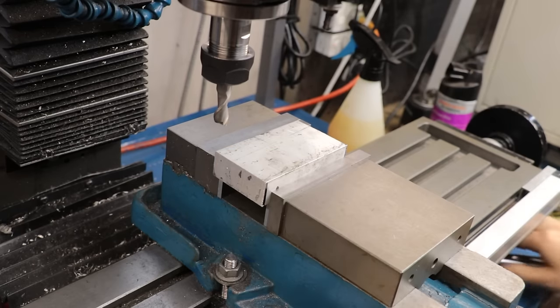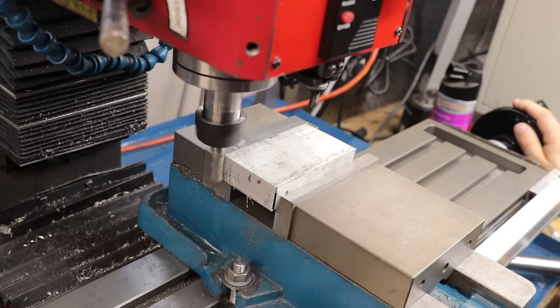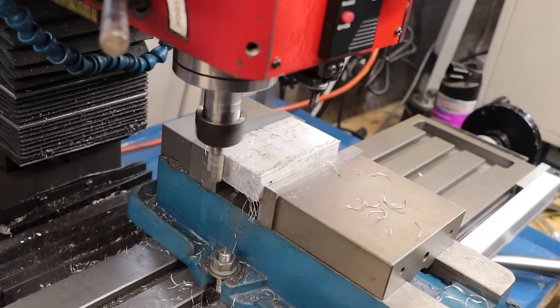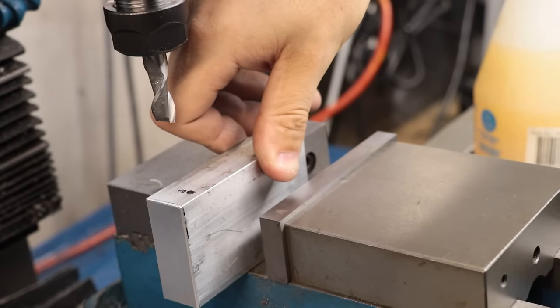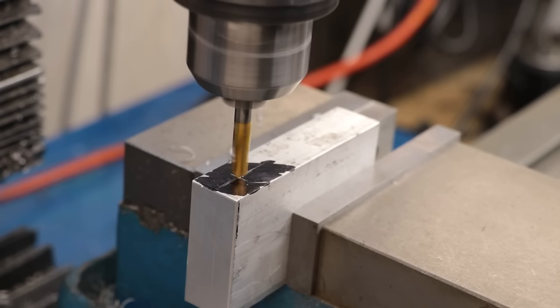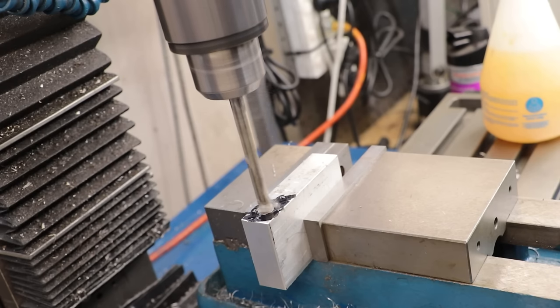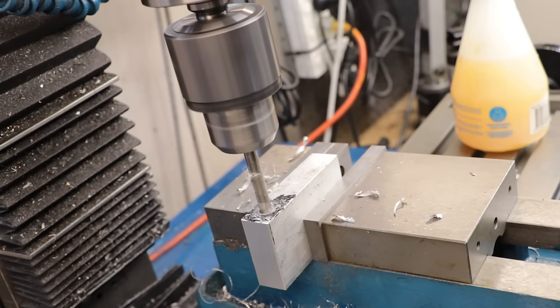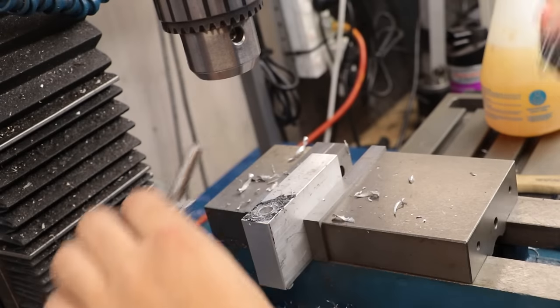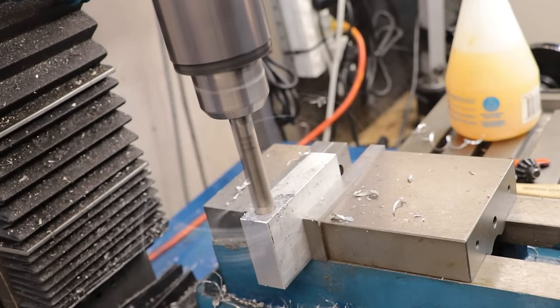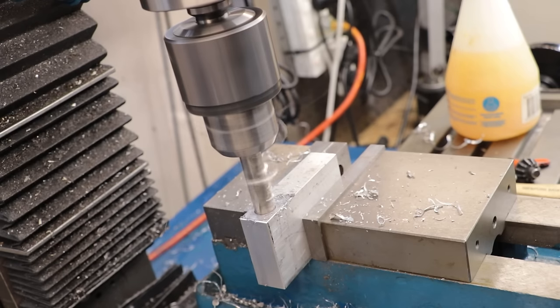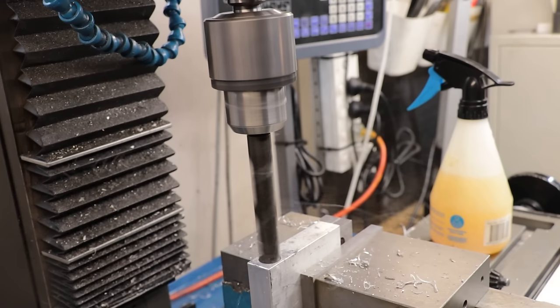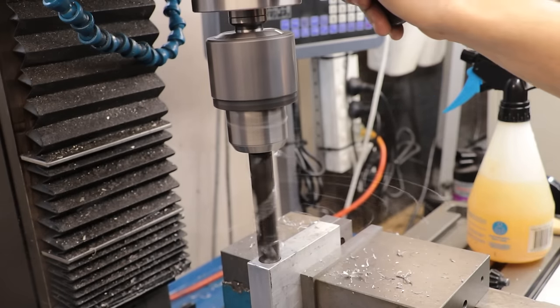So what I'm going to do here is I'll start off with a block of aluminum, which I'll square up on the mill. I'll then get it on its side, where I'll get a 16mm hole drilled through it.